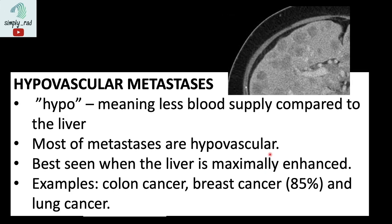To repeat: most kinds of metastasis, since they come from elsewhere in the body, show less vascular supply and hence are called hypovascular metastasis. Hypovascular metastasis are best seen in the portal vein phase, where the liver is maximally enhanced. What kinds of metastasis tend to be hypovascular? They include colon cancer, breast cancer, and lung cancer.